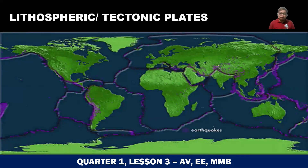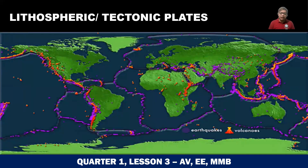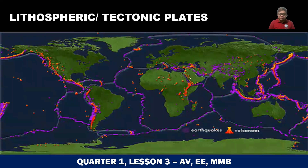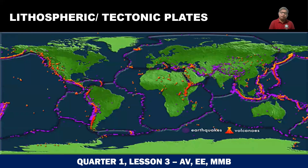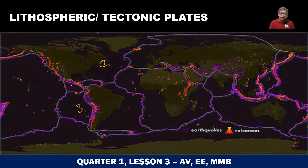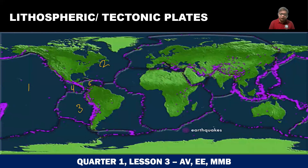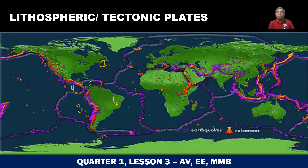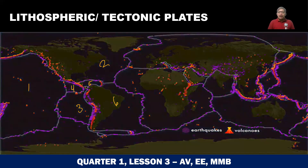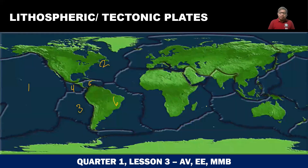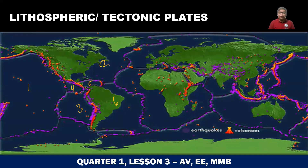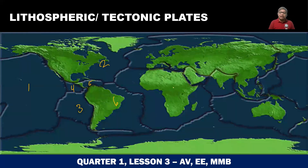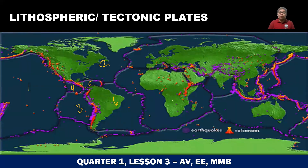Here is a GIF of the tectonic plates. You can see that the Earth's surface is made up of different plates — different chunks of plates. There is a color coding here: the purple lines or purple dots that you can see, they are the earthquake epicenters.